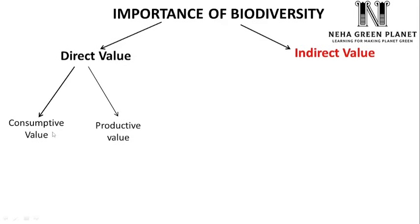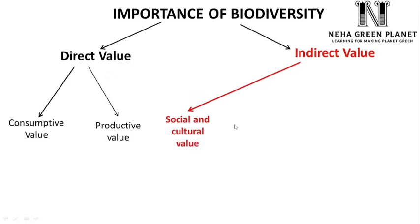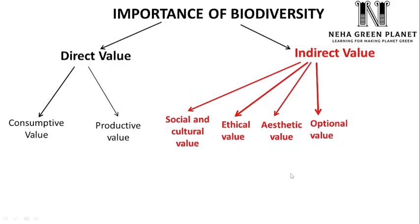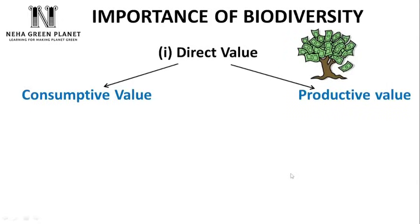Direct value is further of two types: consumptive value and productive value. Consumptive value means those substances which we directly consume from nature and to which we can attach a price. Productive value means when we convert substances into some kind of commodity and then add a price to them. Indirect values are difficult to associate with any monetary gain and are of the following types: social and cultural value, ethical value, aesthetic value, optional value, and environmental service value.